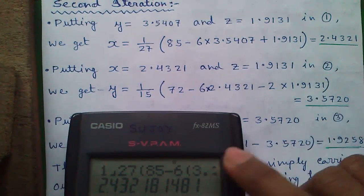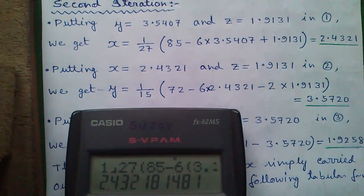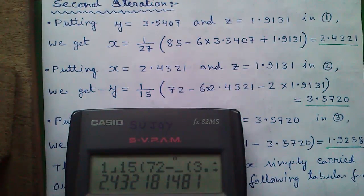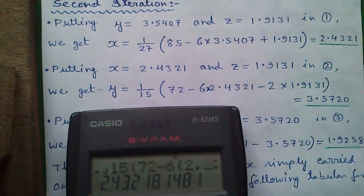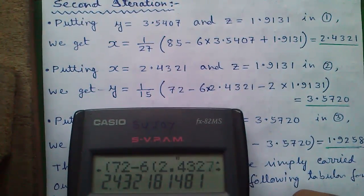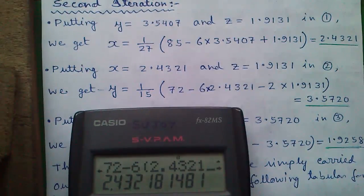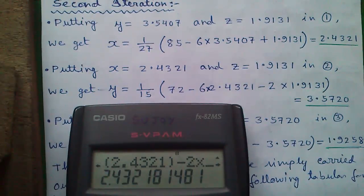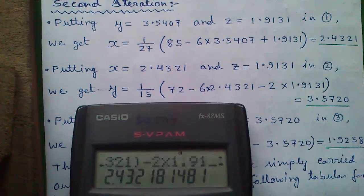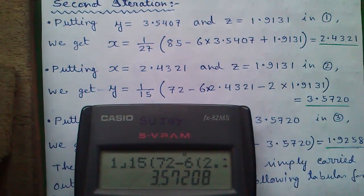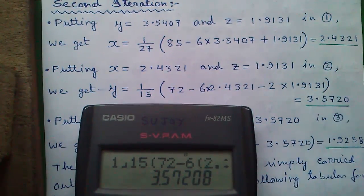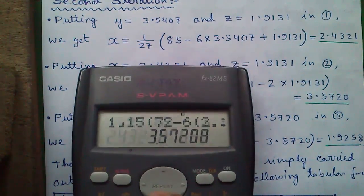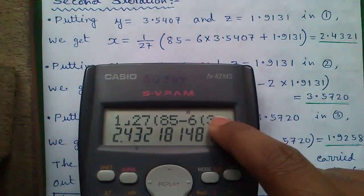Similarly for y, just replace the values: 1 by 15 times 72 minus 6 into 2.4321, minus 2 into the z value. Not only that, you can also use the replay button using the joystick up to access your previous expressions.